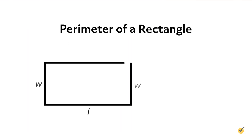To find the perimeter of a rectangle, you can just add up the four sides, just like you did with a square. But since opposite sides of a rectangle are equal, you can also add twice the length plus twice the width. This gives us the perimeter formula P equals 2L plus 2W, where L is the length and W is the width of the rectangle.